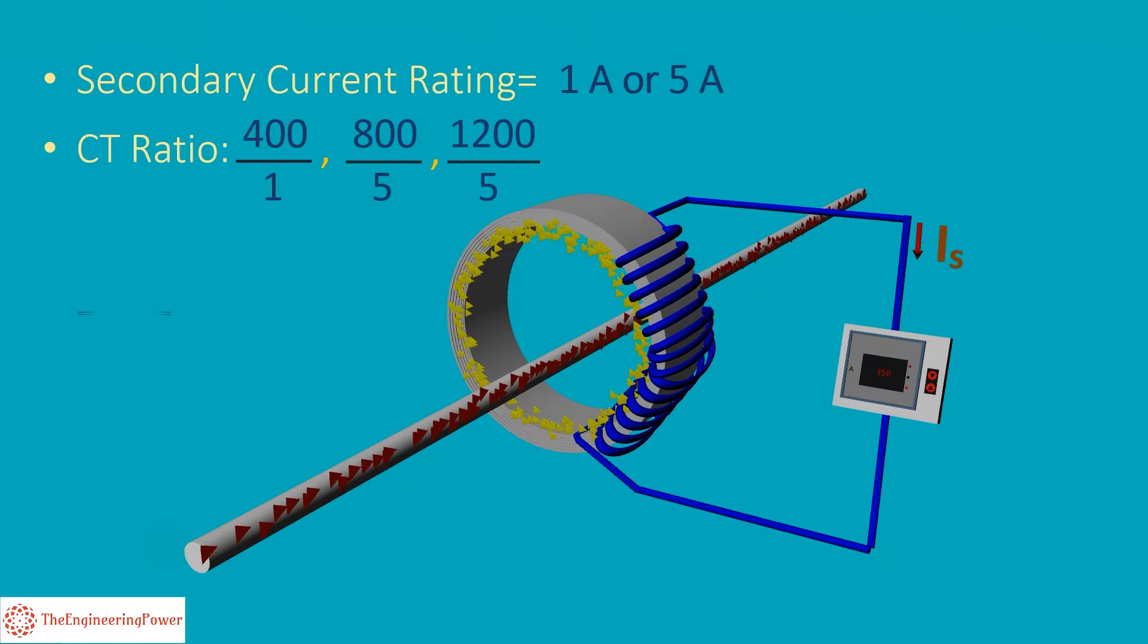Here a ratio of for example 1200 by 5 means that if 1200 Ampere current is flowing through the primary winding, the current in the secondary winding will be 5 Ampere. So with the help of these standardized CT ratios, we can measure the high primary current using low power rating standard ammeters on the secondary side.